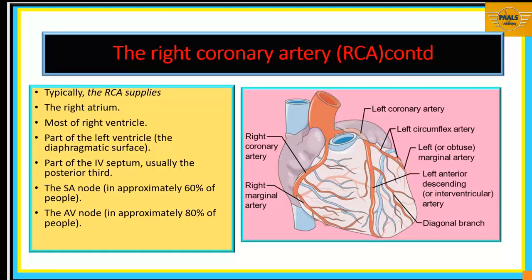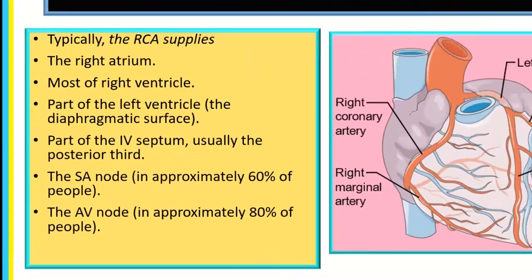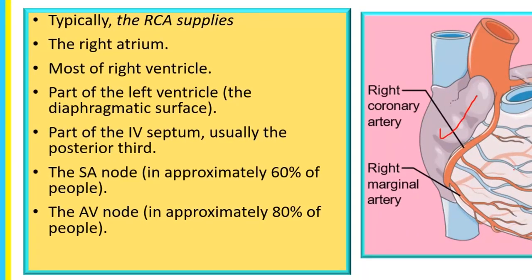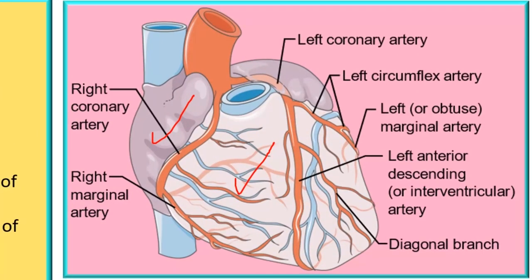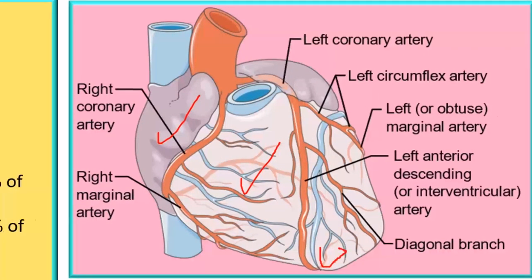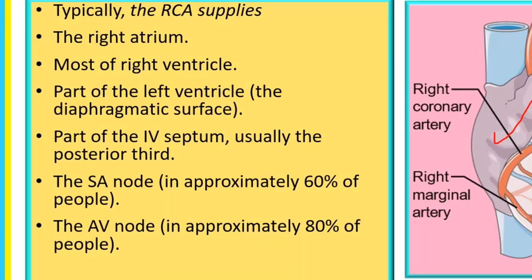Typically, the right coronary artery will supply the right atrium, the right ventricle, part of the left ventricle — particularly the diaphragmatic surface — and part of the interventricular septum, usually the posterior portion. The first branch supplying the SA node occurs in approximately 60% of people, and the branch supplying the AV node occurs in about 80% of people.